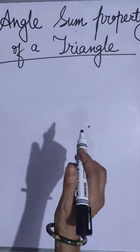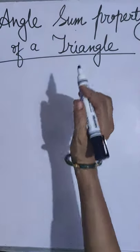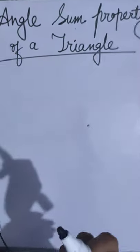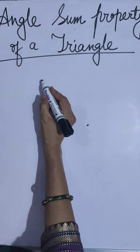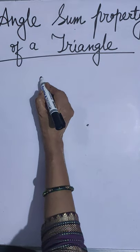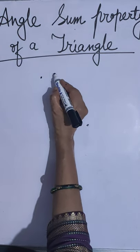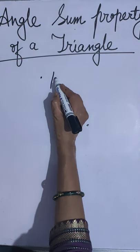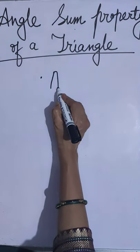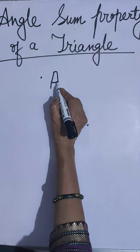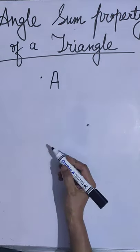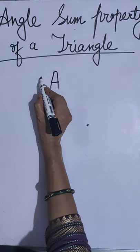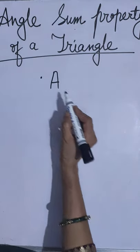Let us do an activity. First, see what it is here — a point. How will you name it? With a capital letter A. This is a point.